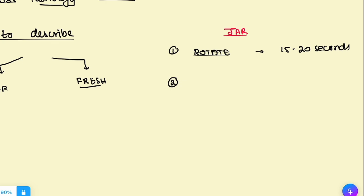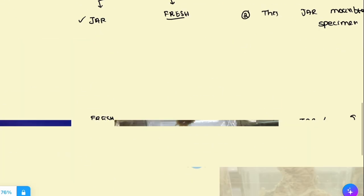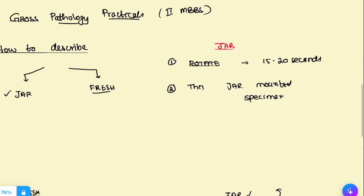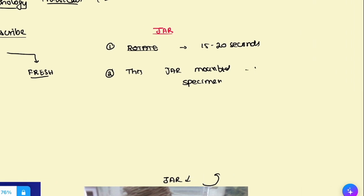Second, I want you to start with 'Sir' or 'Ma'am' — whoever the examiner is — 'this is a jar-mounted specimen.' That's the first thing to say. If it's a fresh specimen, say it's a fresh specimen. Coming to this, I would say: 'This is a jar-mounted specimen of probably an intestine.' Always use the term 'probably' — that will help you in the long run. If possible, use surgical terms too: if it's a uterus, say hysterectomy; if it's a colon, say colectomy.